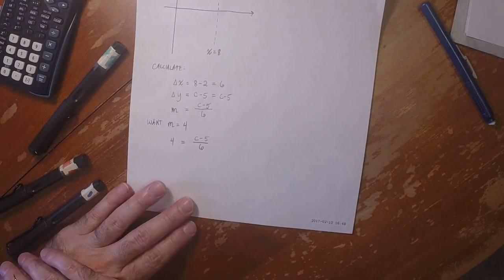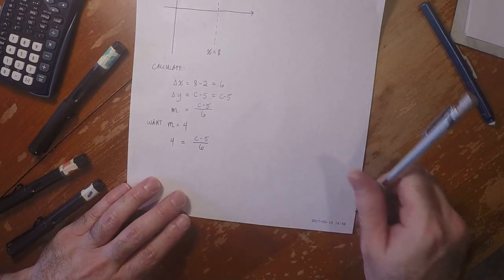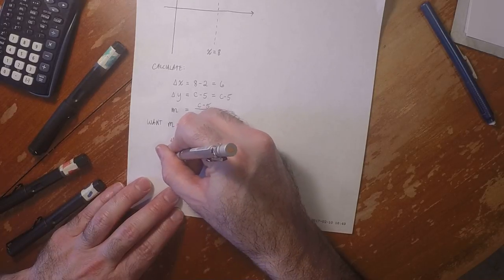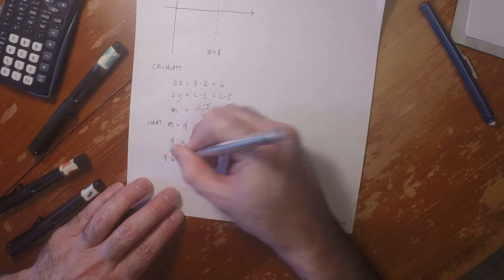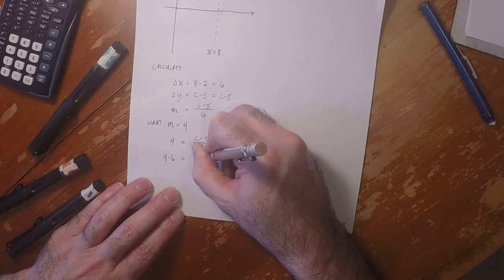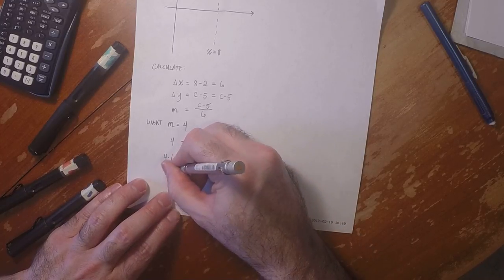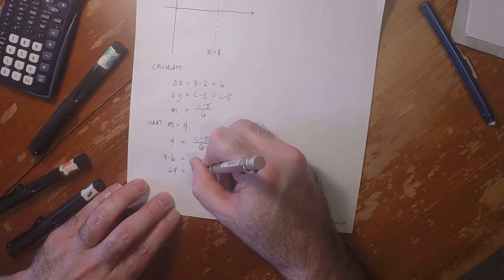And now if we multiply both sides by 6, that would be 4 times 6 is c minus 5. So 24 is c minus 5.